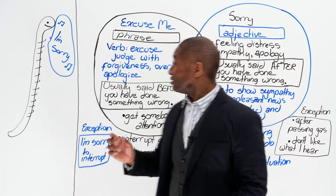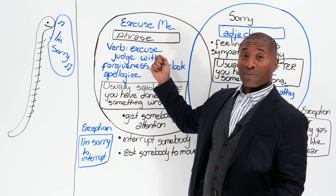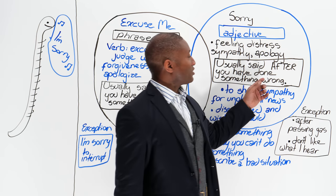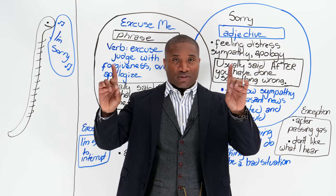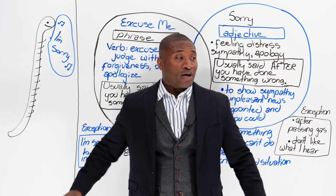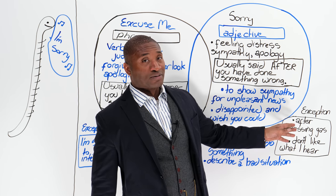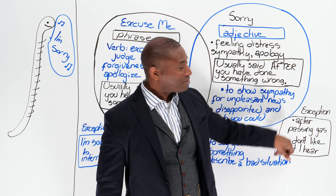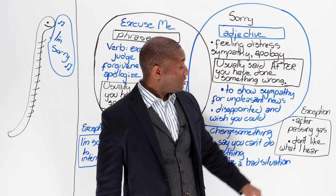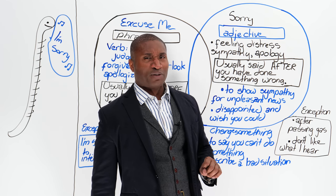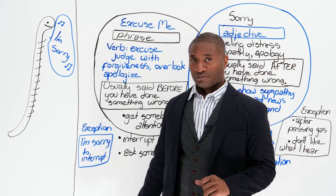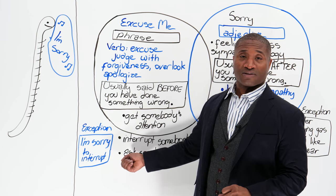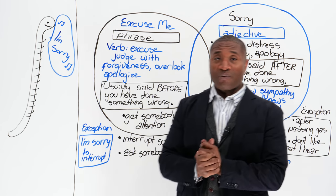A quick review: excuse me comes first — before you do something that you're going to be sorry about. Sorry comes after you've done something wrong. If you can keep those in mind, you'll know almost 90% when to use them. Don't forget the exceptions: when passing gas, you say excuse me. And excuse me is used for things you don't like that you hear. I'm sorry to interrupt is an exception because the interruption has already taken place.